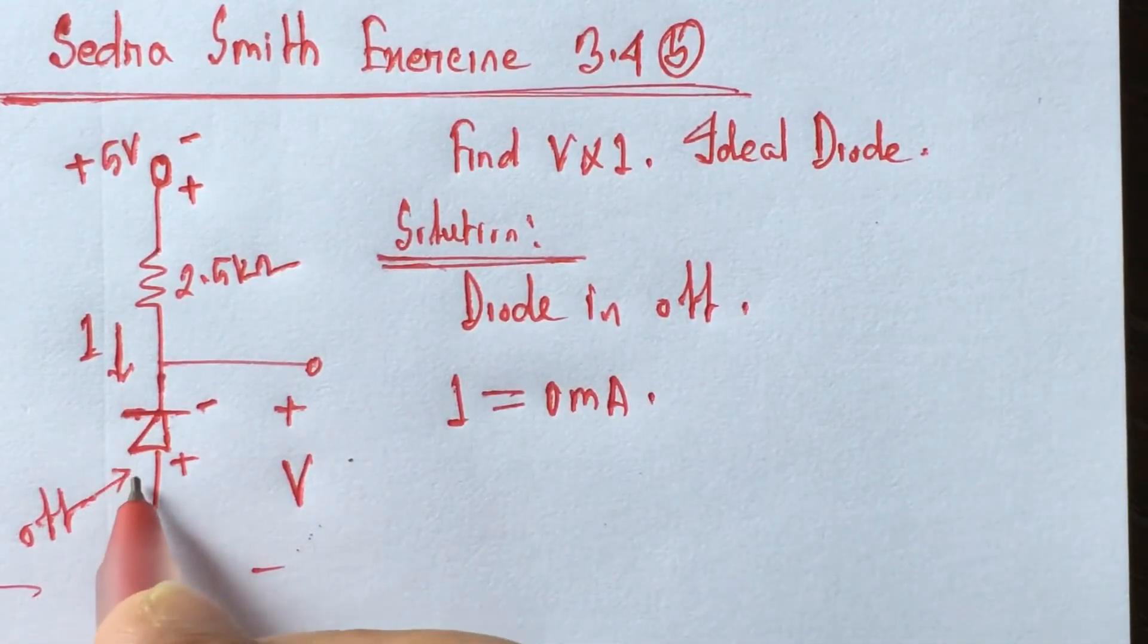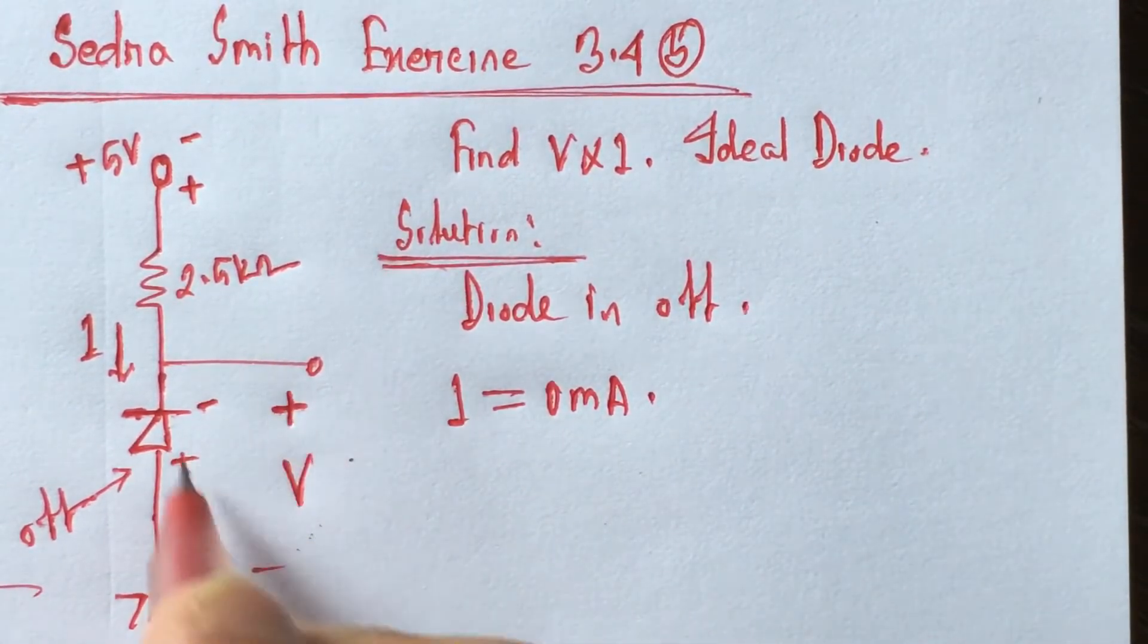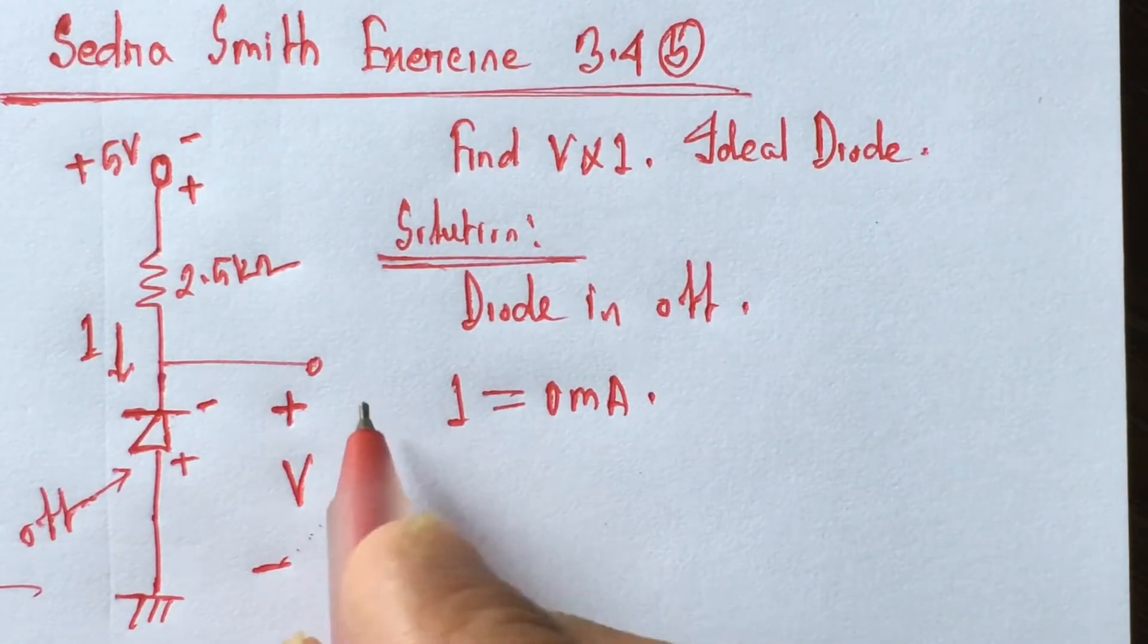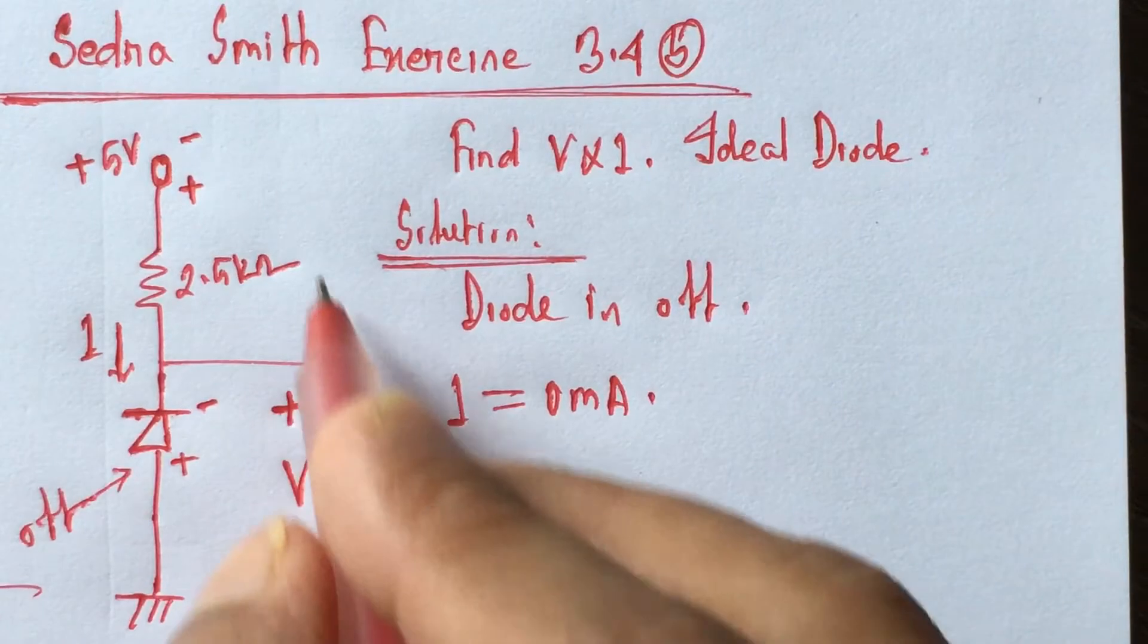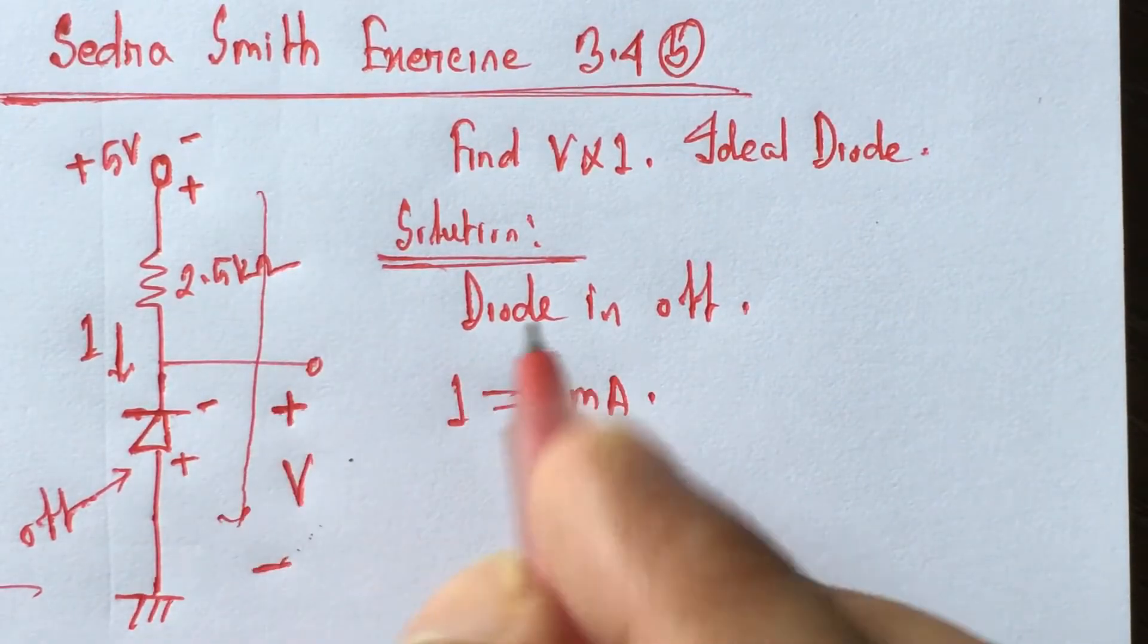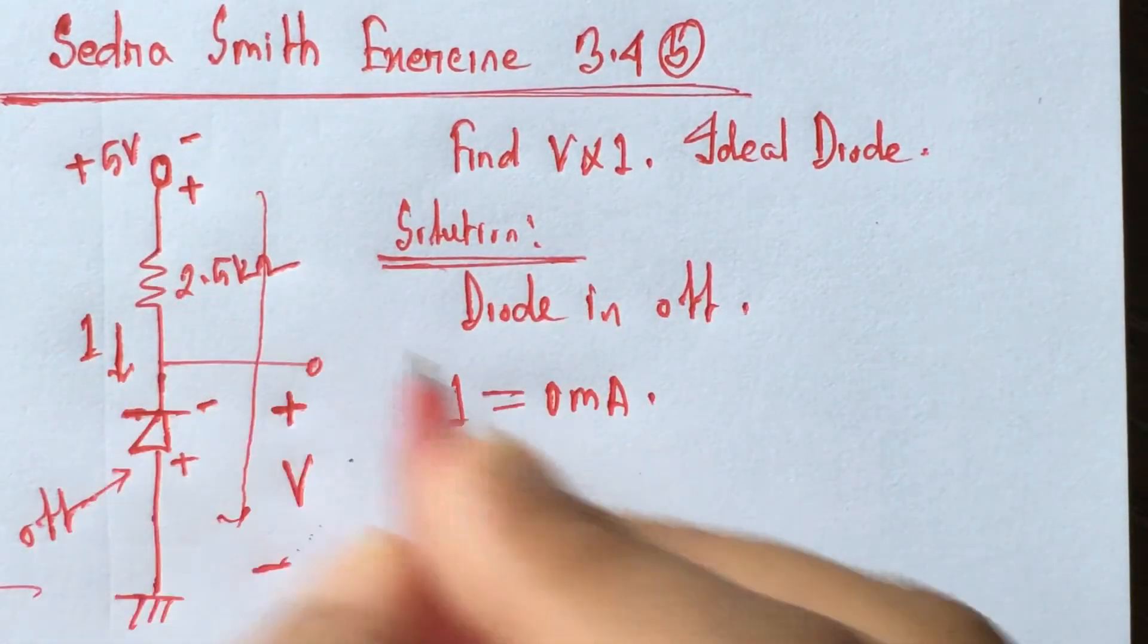Since no current will flow, so this is 0 milliampere. And if this is an open circuit, so we can find the voltage V by using Kirchhoff's voltage law in this path. This is minus 5, minus 5 plus,